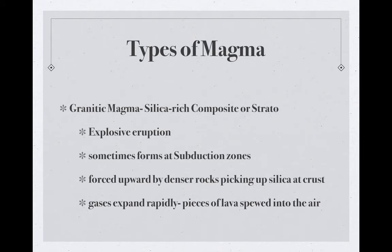Granitic magma forms silica-rich composite or stratovolcanoes and can be very explosive. They're sometimes formed at subduction zones, forced upward by denser rocks picking up silicate at the crust, and the gases expand rapidly, sending pieces of lava spewing into the air very violently. These three different types of magma produce three different types of igneous rocks based on what comes out of those different volcanoes.